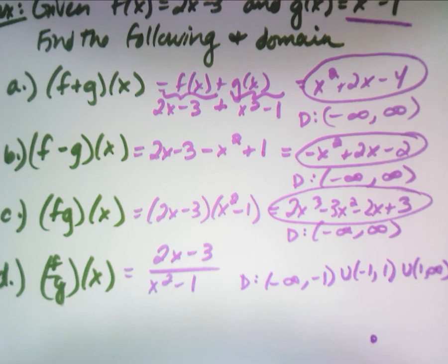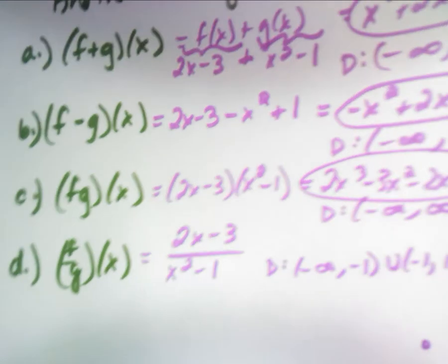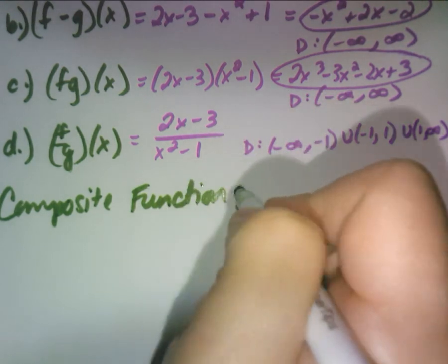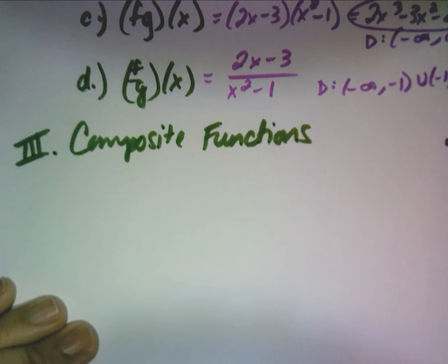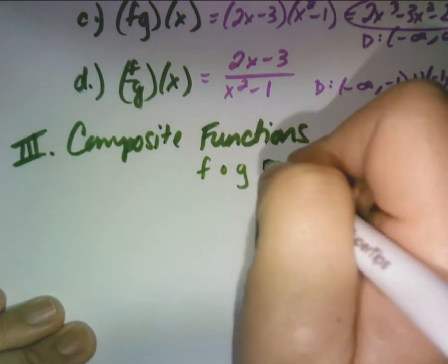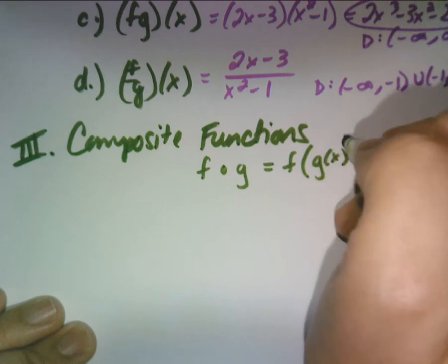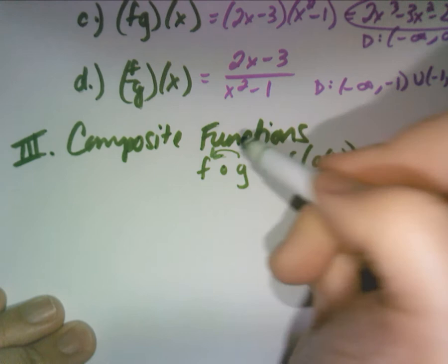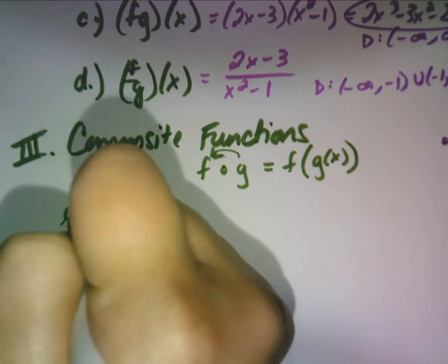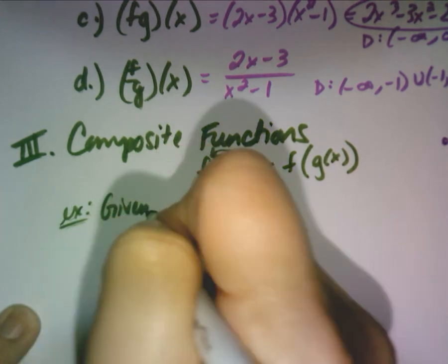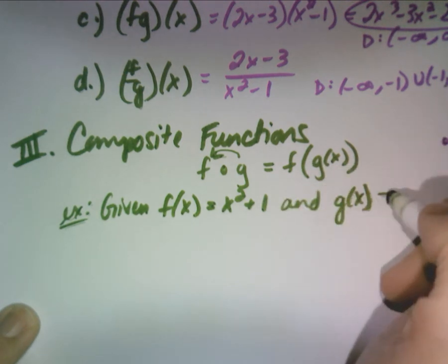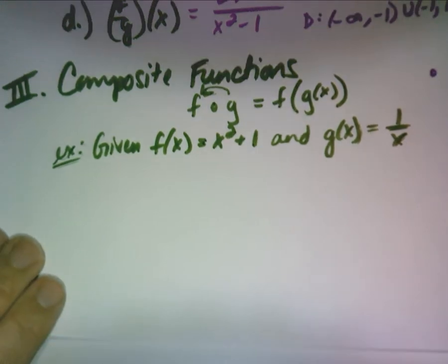After operations, what always comes next? Composite functions — fog. Sometimes written as f(g(x)). What that means is your entire g function goes into the f function everywhere you see an x. Let's do quick examples. Given f(x) = x² + 1 and g(x) = 1/x, find gof and fog.